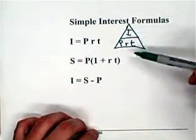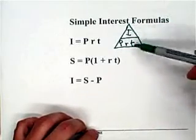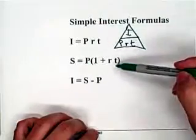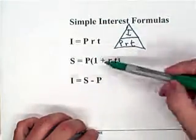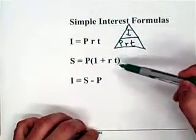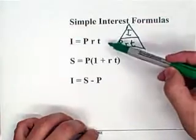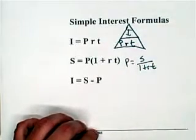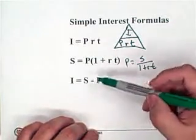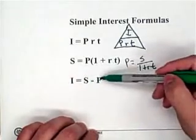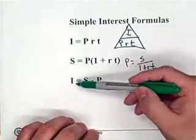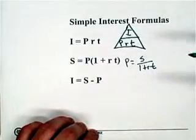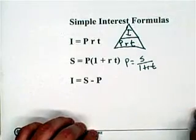So this triangle, if it helps you on the test, write out the triangle, put I on top, PRT on the bottom, and cover up the one you're looking for. The second formula is our maturity value calculation: S equals P times (1 plus R times T), and we can also use this to find P, which would be S divided by (1 plus RT). To find R or T you have to revert back to the original equation. This last formula: sometimes you need to find I when you're given maturity value and principal, so you just take maturity minus principal to get I, and then go back to the original equation to find R or T.